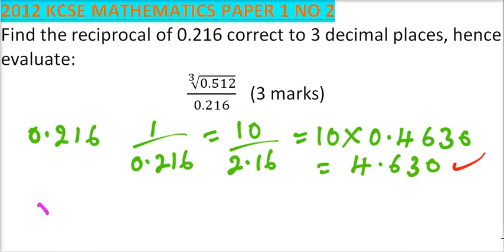So the cube root of 0.512 divided by 0.216 is equals to, you can write